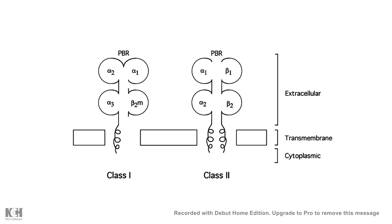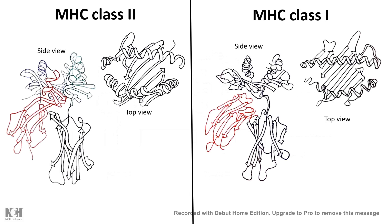If we look at the crystallographic structure, we get a lot of insight into how each class can present peptides to their respective cells, and also what type or size of peptides or antigens can be presented by each class of MHC molecule.